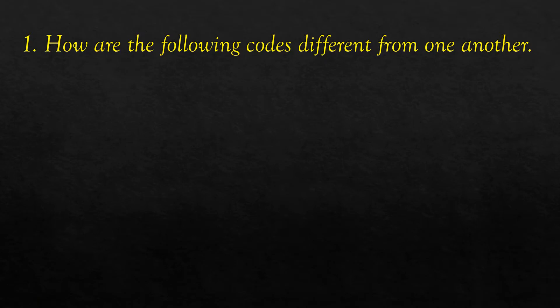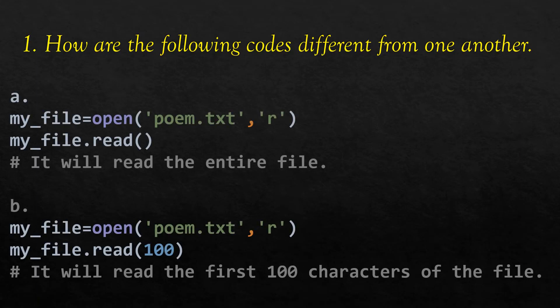We begin with the first question: how are the following codes different from one another? In the first code, one file is opened using the open method in read mode, and with the help of the read function it reads the entire file. In the second case, the file is also opened in read mode, but we have passed 100 as an argument to the read function.